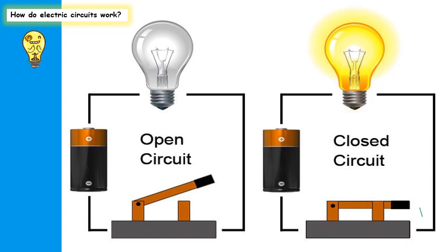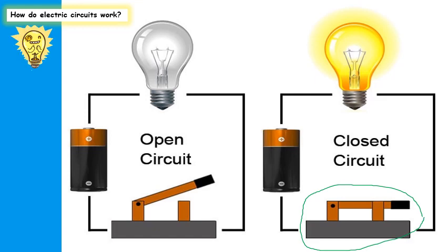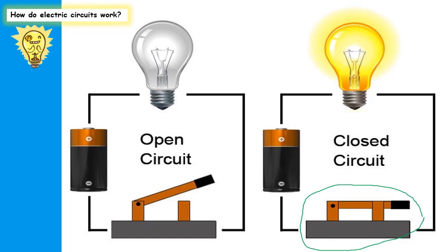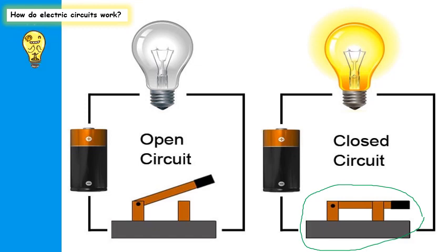When the switch is on, there are no gaps in the circuit. Electrons will pass from the negative terminal of the battery to its positive side. This is a closed circuit, so the light bulb is on.